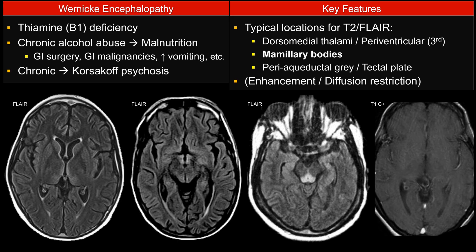If this is not treated, it can lead to a more chronic state, leading into Korsakoff psychosis. Therefore it's very important to recognize the abnormality, particularly involvement of the mammillary bodies and the periaqueductal gray, to make you think of Wernicke's encephalopathy, because this is reversible.